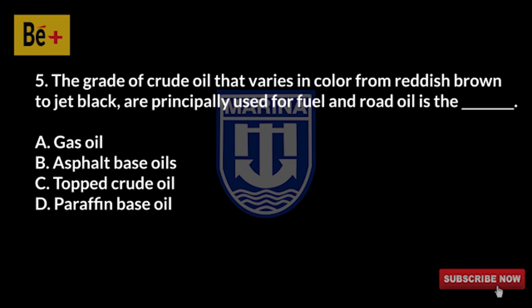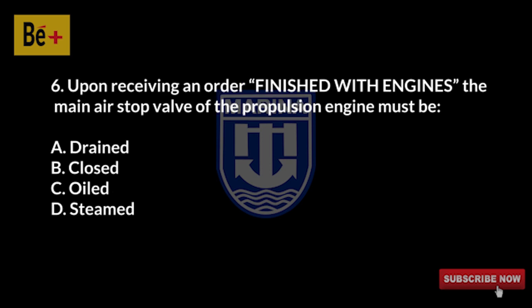The grade of crude oil that varies in color from reddish brown to jet black, principally used for fuel and road oil, is the: A) gas oil, B) asphalt base oils, C) top crude oil, D) paraffin base oil. The answer is B, asphalt base oils.